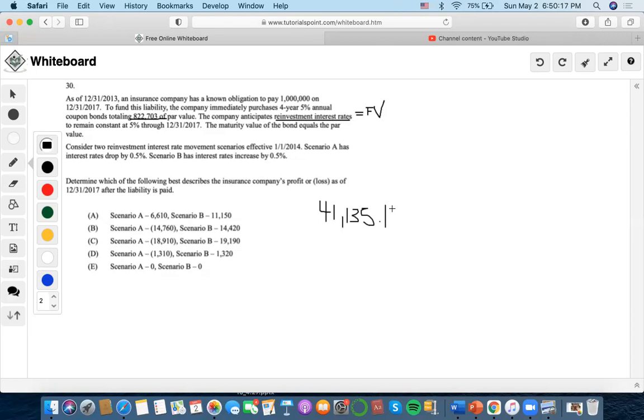We're going to use the future value since reinvestment is a future value concept. It also says that it remains constant at 5% through 2017, so four years. Now consider the reinvestment rates for scenario A and B. For A, we would have to compute this equation, but interest rates actually drop by 0.5%. So what is 5% minus 0.5%? 4.5%. And for B, interest rates increase by 0.5%, so the interest rate we would need to use is 5.5%. So now let's compute both scenarios.